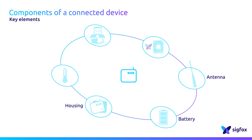To get valuable data, the device includes at least one sensor. It is a key element because most of the IoT applications measure physical parameters such as humidity, temperature, vibrations, and movement.